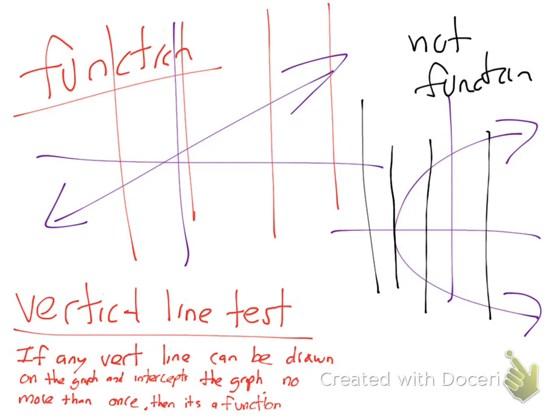So that's the vertical line test. If you're given a graph, use the vertical line test. If you're given a table, look at the x values to see if they go to the same outputs. If you're given a mapping, look for an arrow from an input going to only one output.